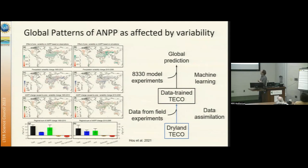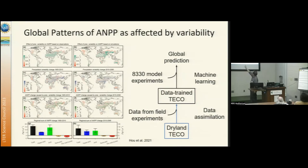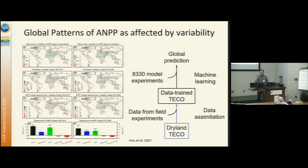The left side shows historical results; the right side shows future predictions. We quantified precipitation variability and its impact on above-ground net primary productivity (NPP). In the bottom panel, you can see that in very dry, hyper-arid areas, increased intra-annual precipitation variability actually leads to increasing net primary productivity. But in subhumid drylands, above-ground NPP is decreasing for both historical and future scenarios.